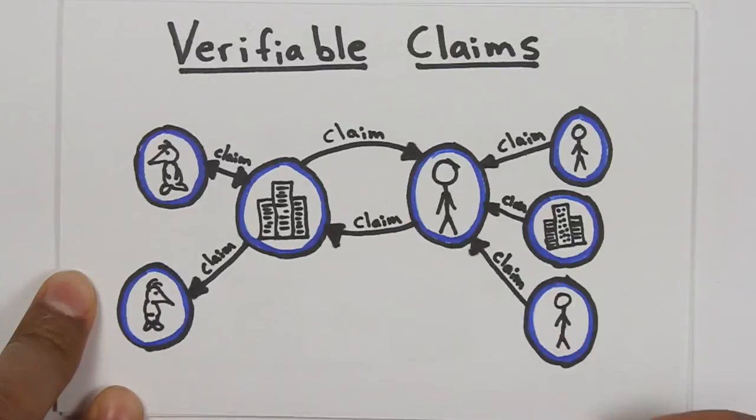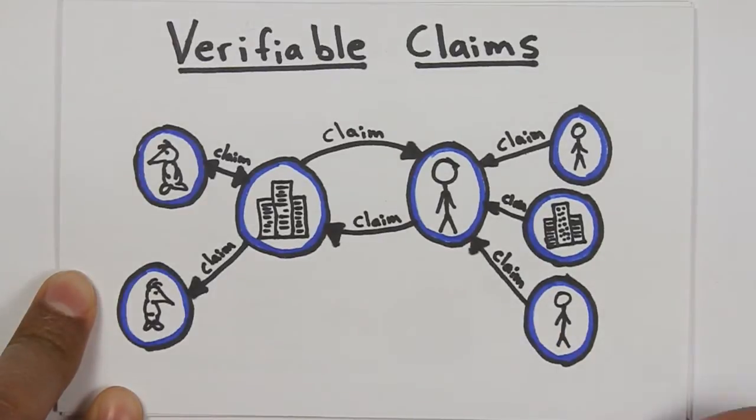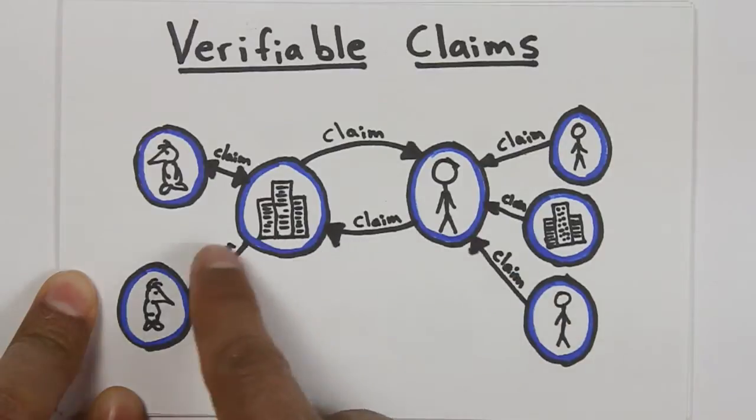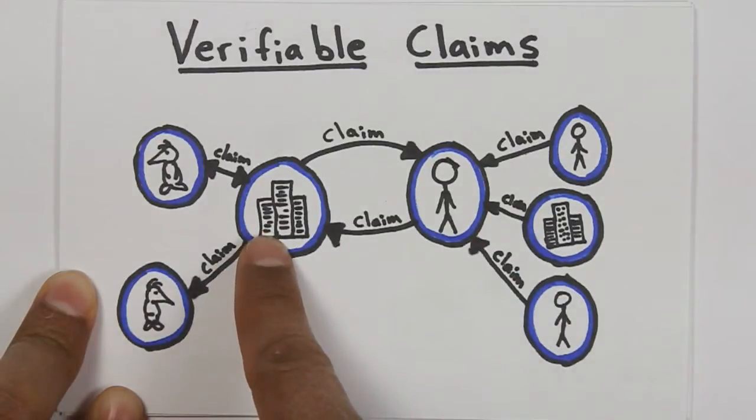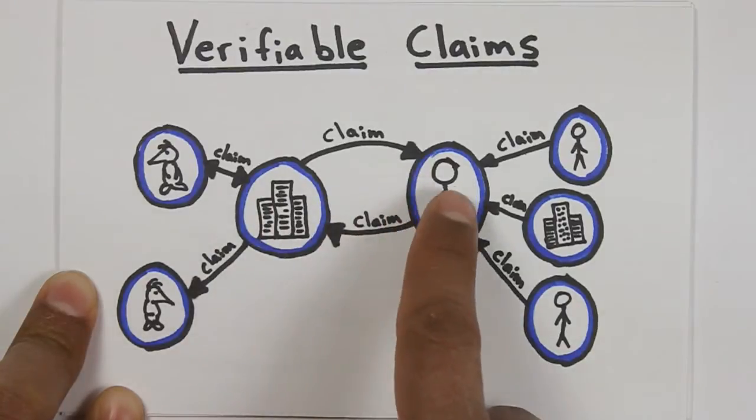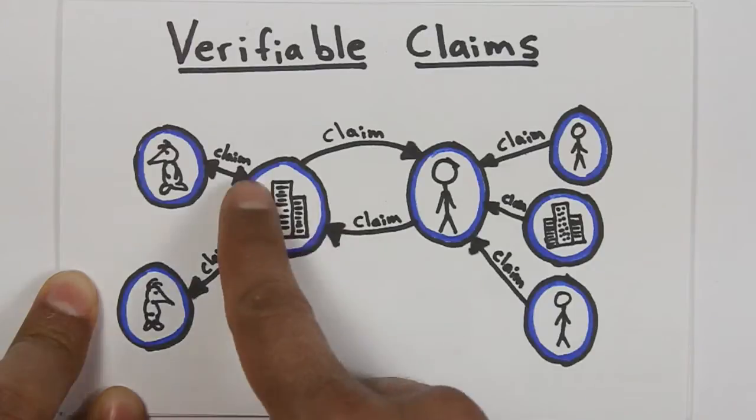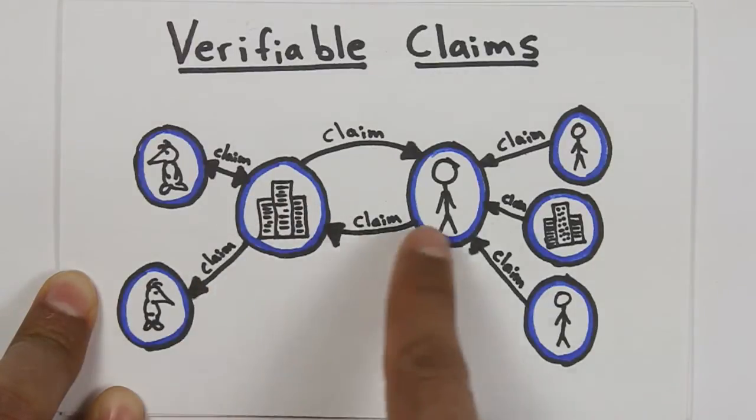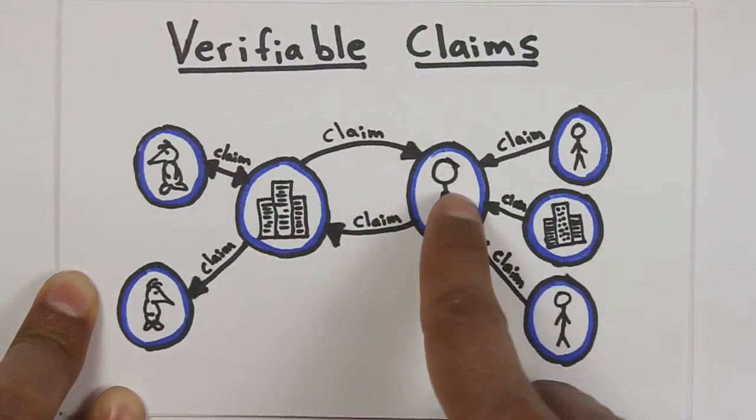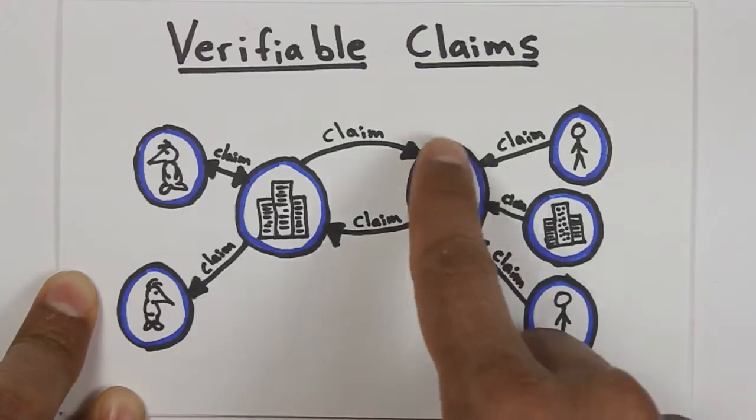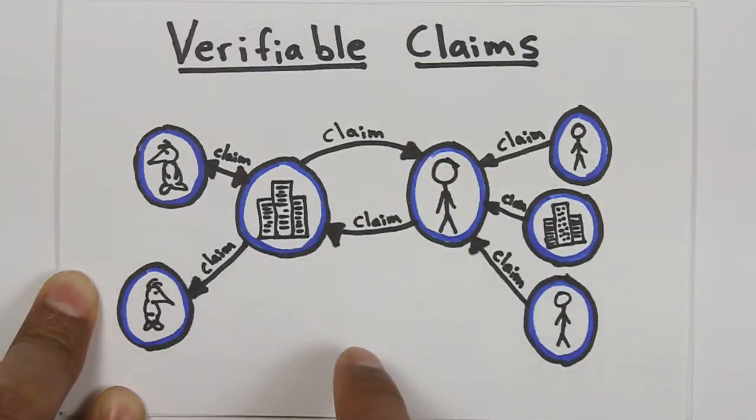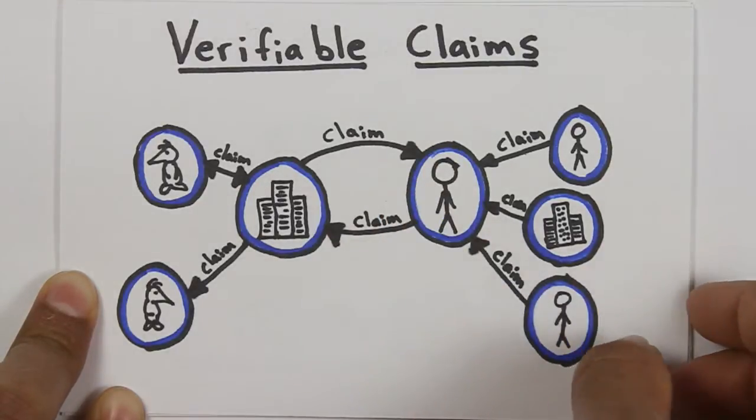What the claims in the credential allow us to do is they allow us to state things about other things out there on the internet and in the real world. It allows organizations to make claims about people, people to make claims about organizations, organizations to make claims about animals. All kinds of different claims can be made in this huge web of linked data that we have, and that's a really powerful concept.